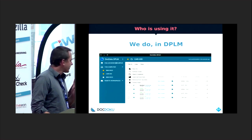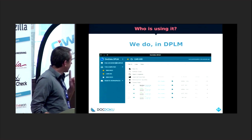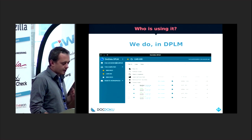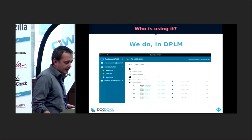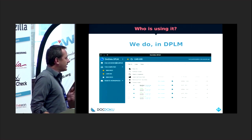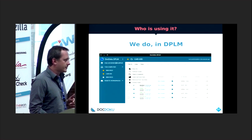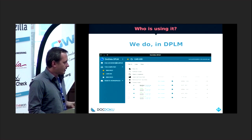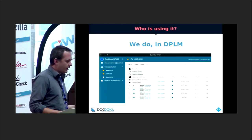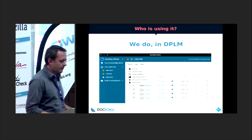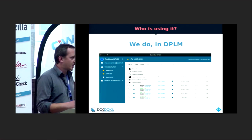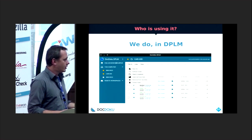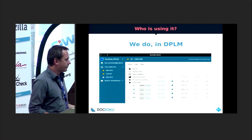The second product using the JavaScript SDK is our command line interface. Like Git or SVN, you can do DPLM checkout, check-in, push, and pull from your command line — so it's not for every user.